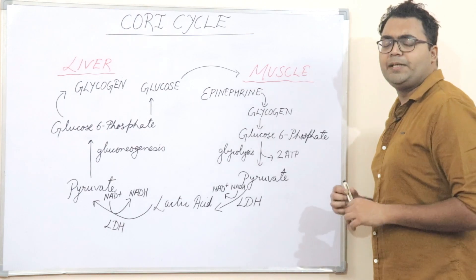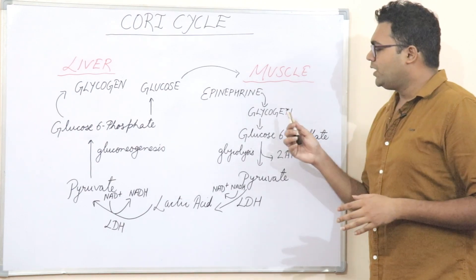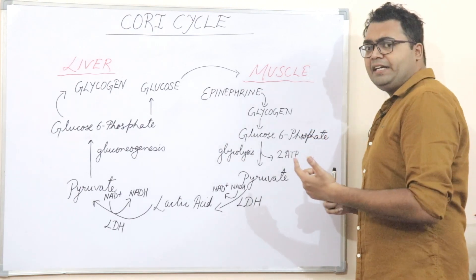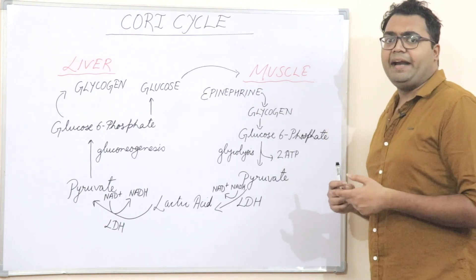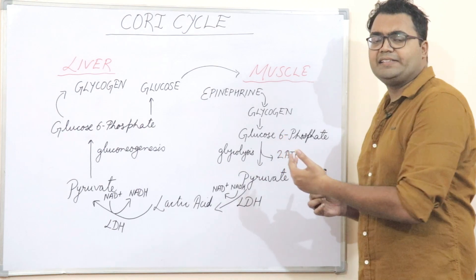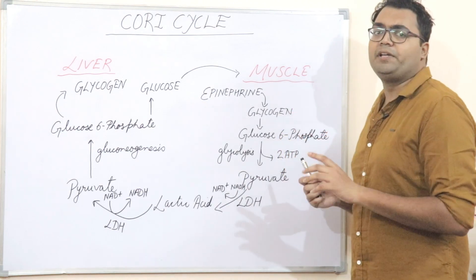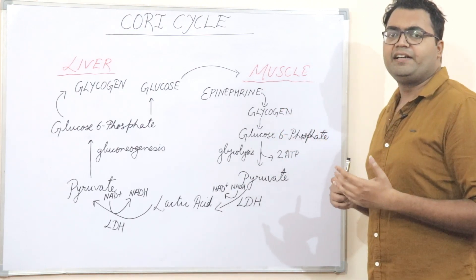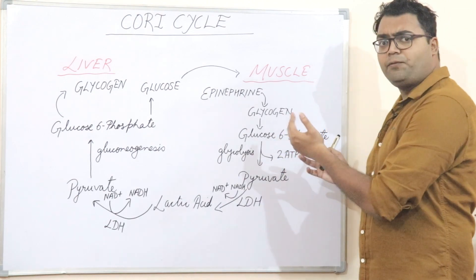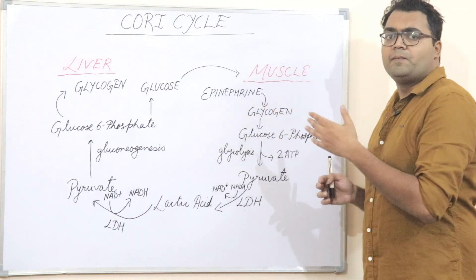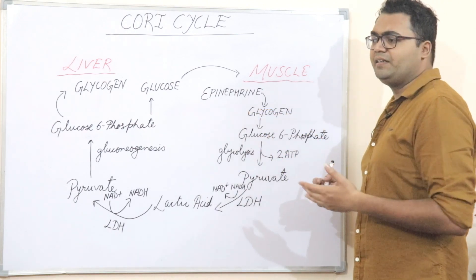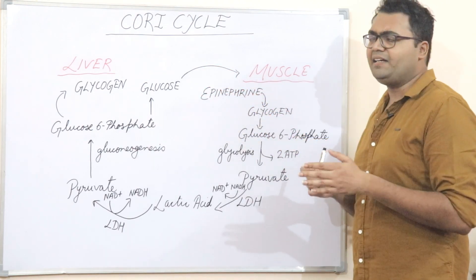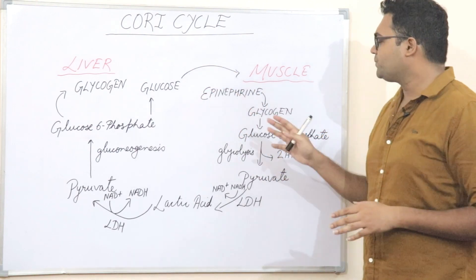Epinephrine will bind to the GPCR — G-protein coupled receptors — on the muscle cells, and it will initiate the secondary messenger pathway by stimulating adenyl cyclase, which will stimulate cyclic AMP, which will then stimulate PKA — protein kinase A, cAMP-dependent protein kinase — which will then stimulate glycogen phosphorylase. The details of glycogen phosphorylase stimulation will be discussed in my next video, which will deal with glycogenolysis and glycogenesis pathways.